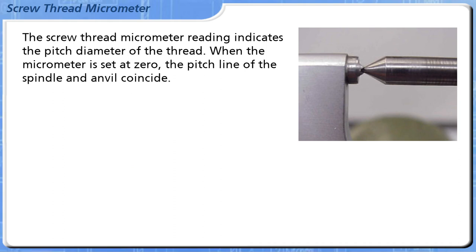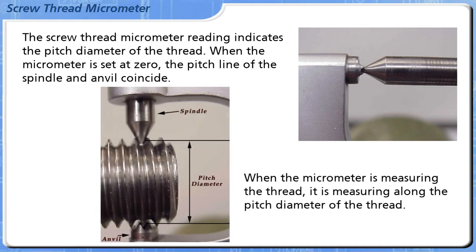The Screw Thread Micrometer reading indicates the pitch diameter of the thread. When the micrometer is set at zero, the pitch line of the spindle and anvil coincide. When the micrometer is measuring the thread, it is measuring along the pitch diameter of the thread.